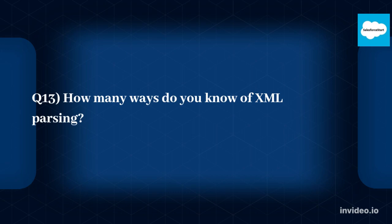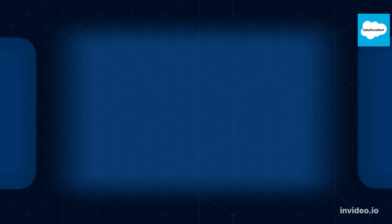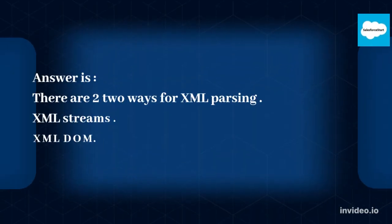Q13: How many ways do you know of for XML parsing? There are two ways for XML parsing: 1. XML Streams, 2. XML DOM.